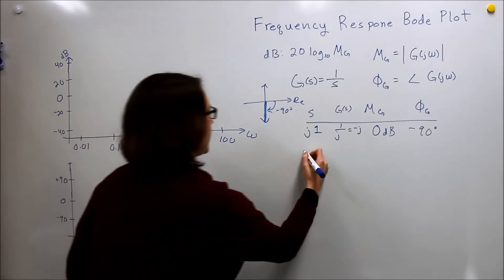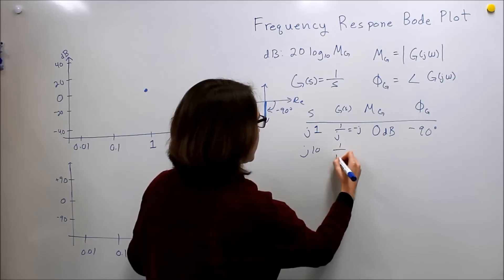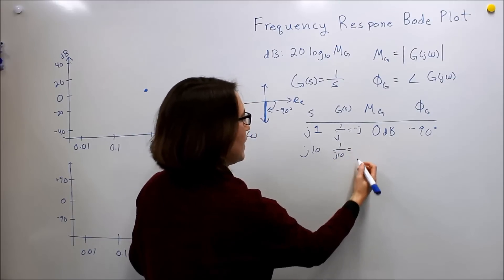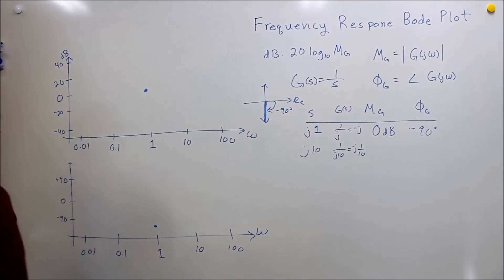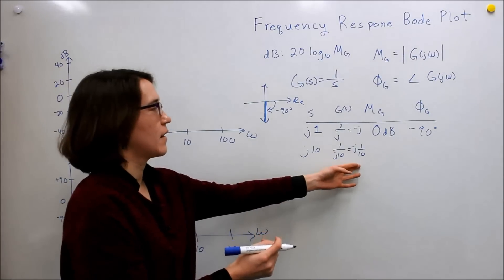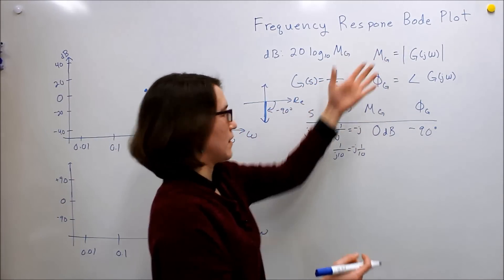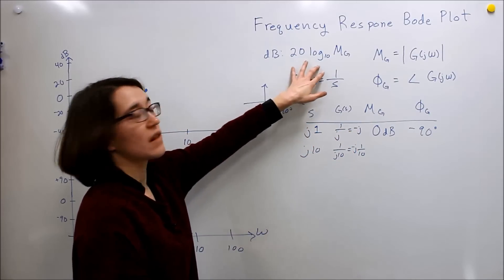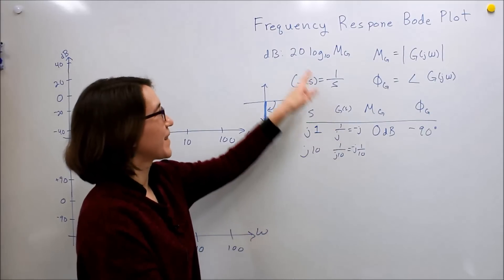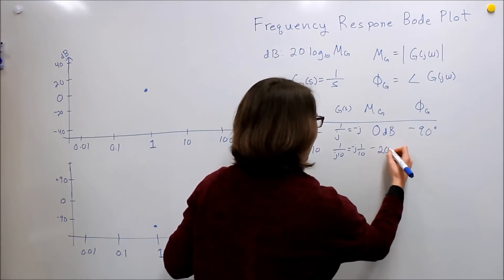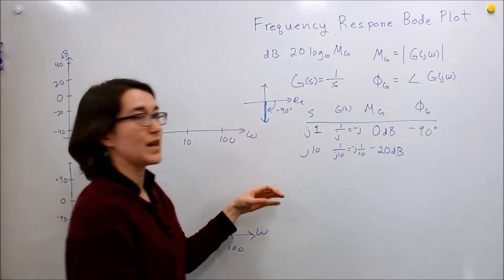So let's do, again, now 10, so we'll do J10 as S, which means we get 1 over J10, which is going to be a negative J1 over 10. So if we look at that now, now we have 1 tenth going into here, so we look at the magnitude that's 1 over 10. We look then at the log of that, so we take the log base 10 of 1 over 10, we get negative 1 times 20, so we get negative 20 dB. And our phase is still going to be the negative J direction, so it's still going to be negative 90.